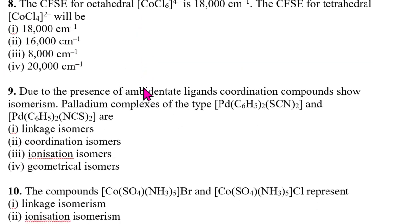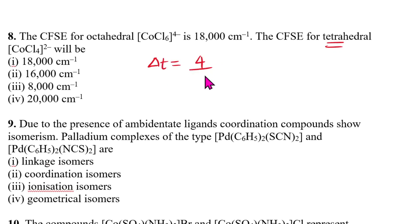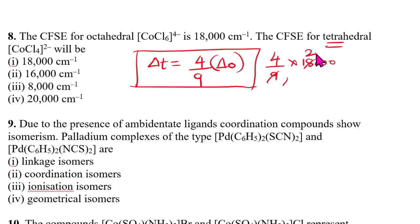Eighth question: CFSE for a tetrahedral complex is given; find the CFSE for the octahedral complex. The formula is: CFSE(tetrahedral) = 4/9 × CFSE(octahedral). So CFSE(octahedral) = 9/4 × 8000 = 18,000 cm⁻¹. Wait — reversing: CFSE(tetrahedral) = 4/9 × 18,000 = 8,000 cm⁻¹. The answer is 8,000 per centimeter.